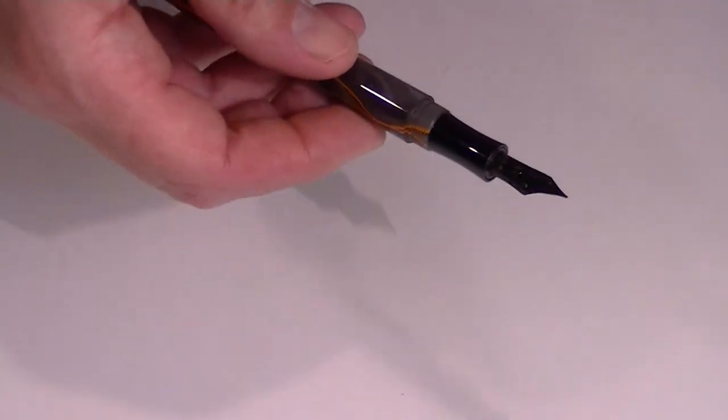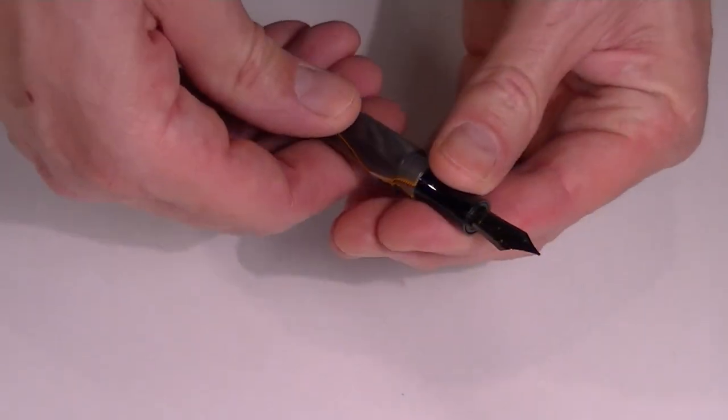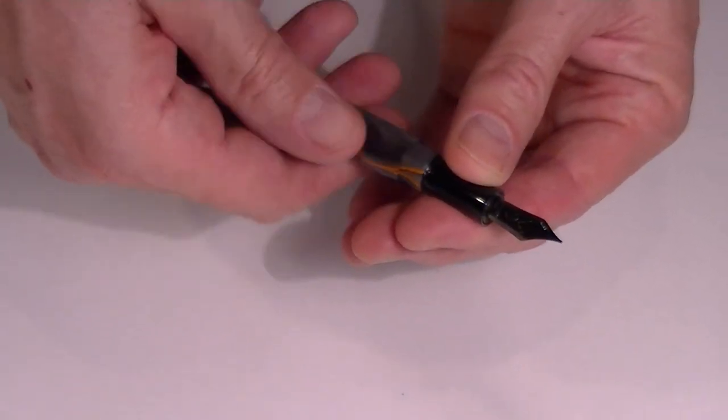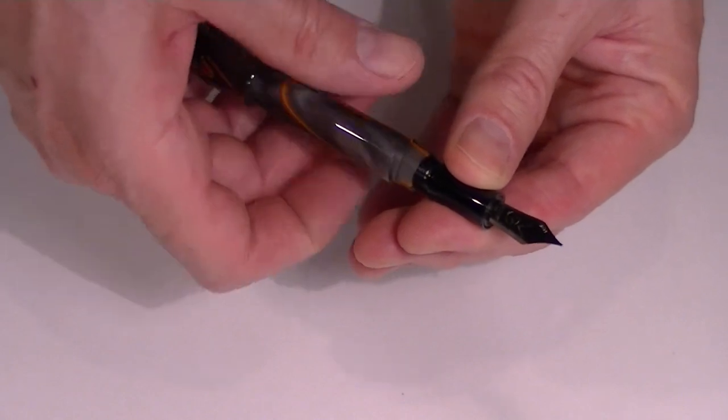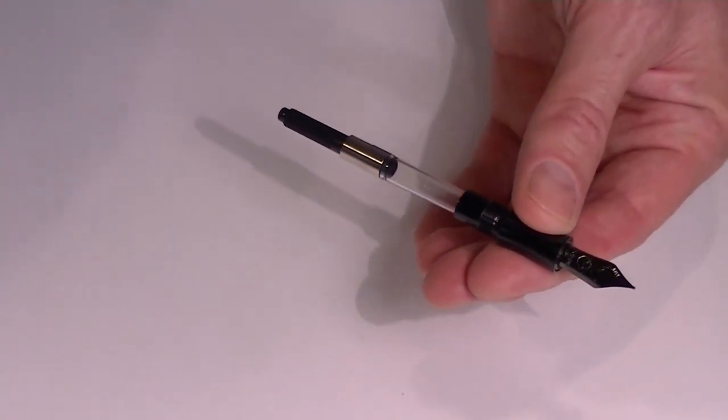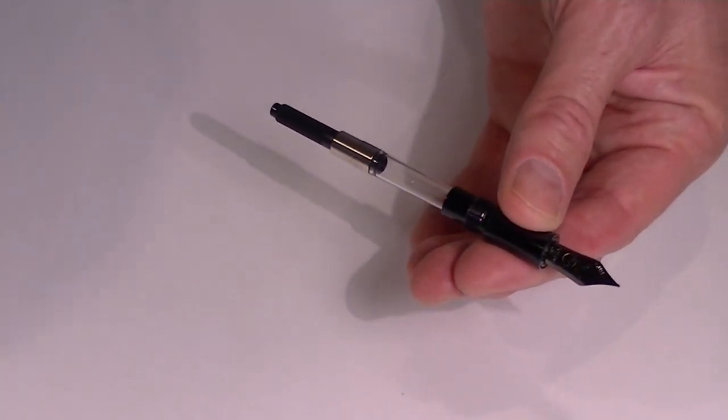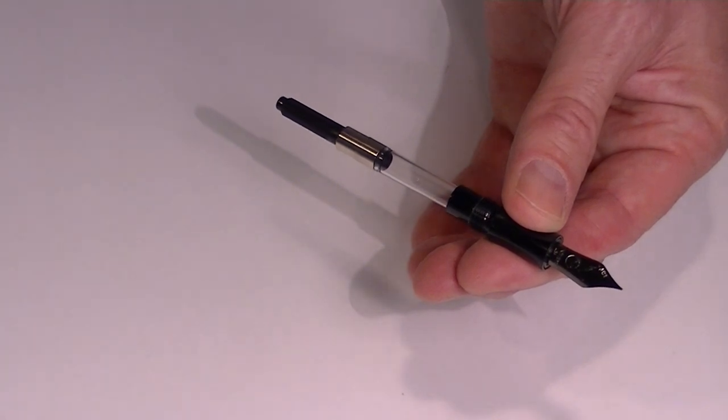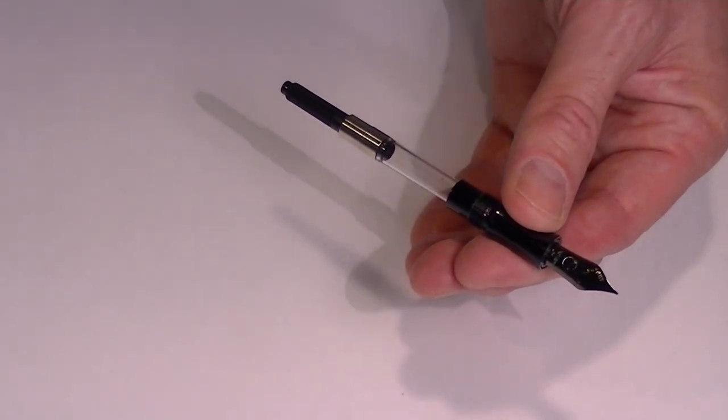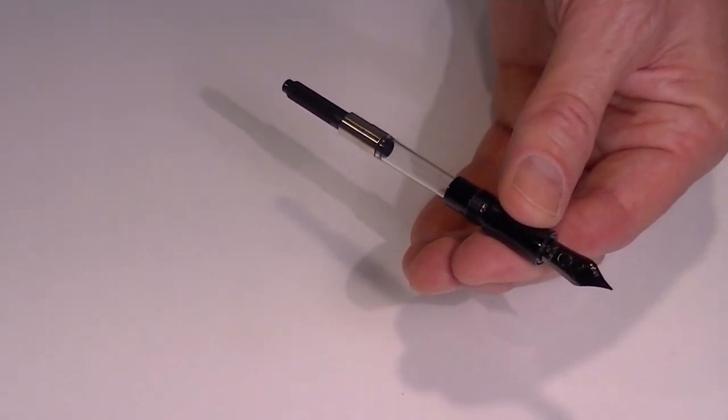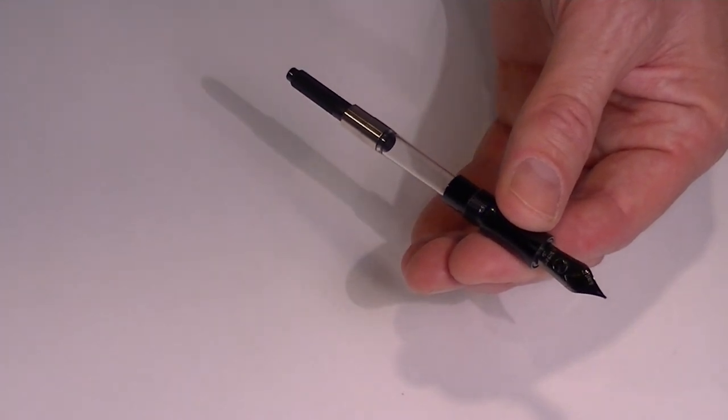To remove the end of this pen you unscrew the nib section and this particular pen is a cartridge converter style pen. It comes with a converter included. That converter can be removed from the nib section of the barrel by unscrewing it if you'd rather use a cartridge.